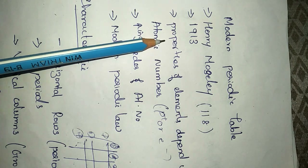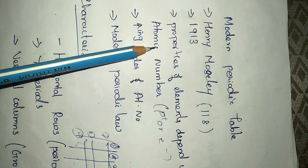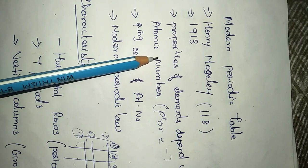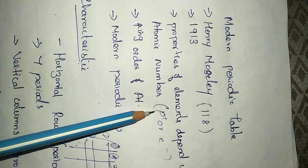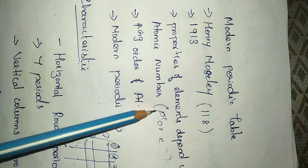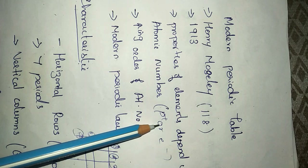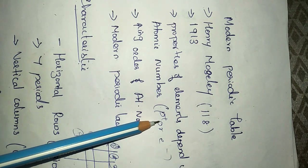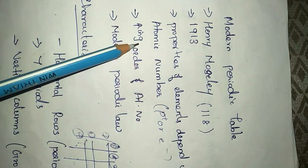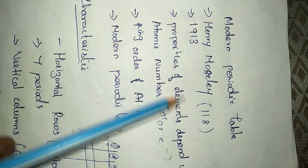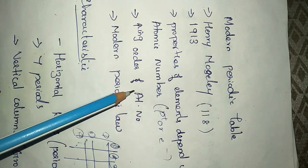According to Henry Moseley, the physical and chemical properties of the elements are based on the atomic number, not on the mass number. Atomic number is either the total number of protons or the total number of electrons present in an atom. In chemical reactions, the outer shell electrons take part, so properties mainly depend on the atomic number. He arranged all 118 elements in increasing order of atomic number.